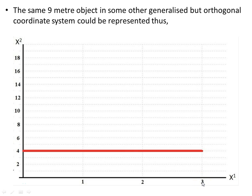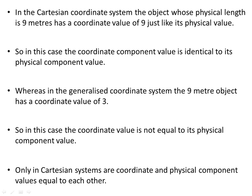So in a different coordinate system we have different coordinate values. The challenge is: how do we compare those, and how do we represent the true length? In a Cartesian coordinate system the coordinate component value is identical to the physical component value. In the generalized coordinate system the nine-meter object has a coordinate value of three, so the coordinate value is not equal to the physical component value. Only in Cartesian systems are coordinate and physical component values equal to each other.